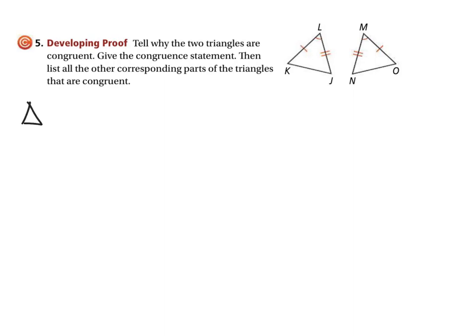So how do we write the congruence statement? Well, we're going to say triangle, and I'm going to say KLJ. It doesn't really matter what order we list those in. What matters is that when we list the second triangle, we're listing all the vertices in the correct order.